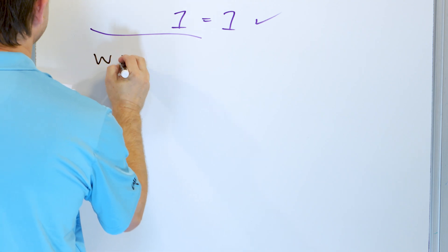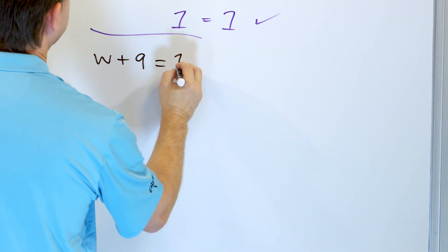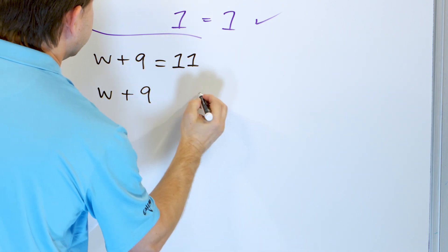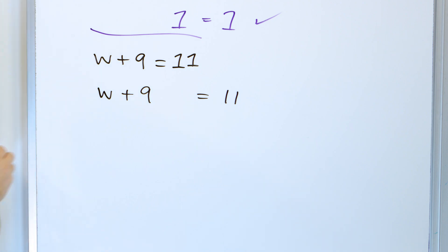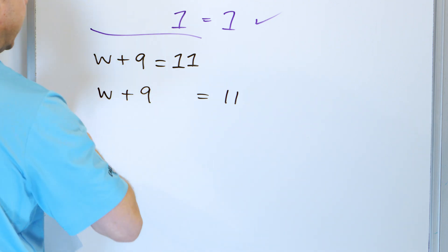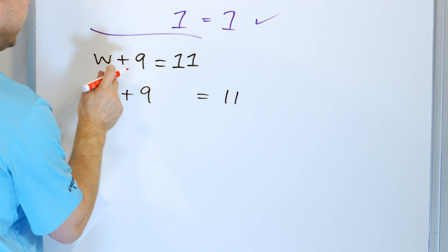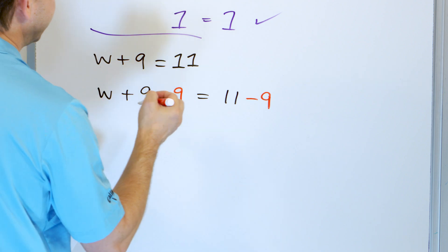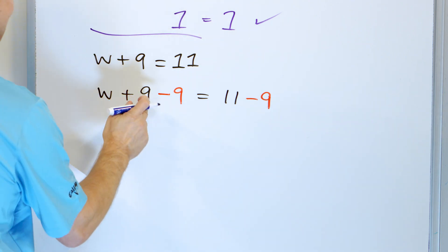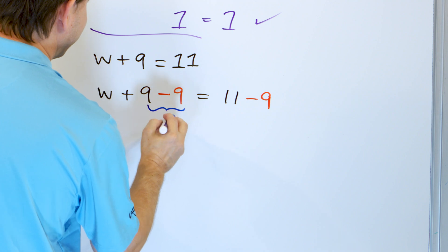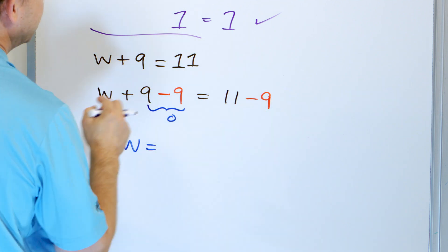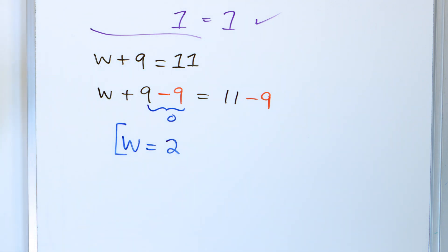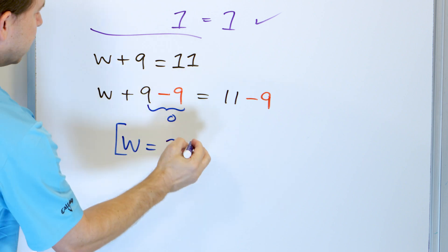What about w plus 9 equals 11? Rewrite the equation: w plus 9 equals 11. What I have here is addition of 9. I want to undo it — get rid of that 9 and get the variable by itself — so I'm going to do the opposite: subtract 9. I have to do it to both sides to keep it balanced. 9 minus 9 gives you 0, drops away, and I have only a w. What is 11 minus 9? 2. Answer is 2. Check it: 2 plus 9 is 11. Correct.